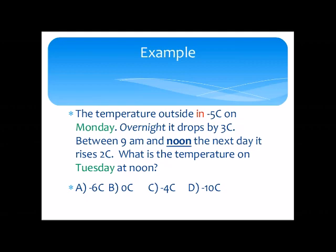Here's another example: 'The temperature outside is minus five Celsius on Monday. Overnight it drops by three Celsius. Between nine a.m. and noon the next day it rises two Celsius. What's the temperature on Tuesday at noon?' There is a spelling mistake in the question, which may throw off a student with an LD. The term 'noon' is a time convention that may not be understood by an LD learner to mean 12 o'clock. The rote knowledge of the days of the week may also not be strong — understanding that Tuesday follows Monday is assumed. I once worked with a boy who only knew the months of the year based on what hunting season he was in. The word 'overnight' — meaning during the course of one night — contains lots of embedded language.